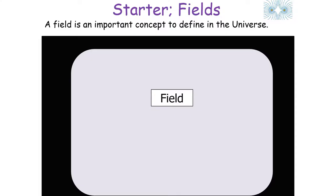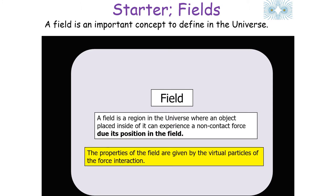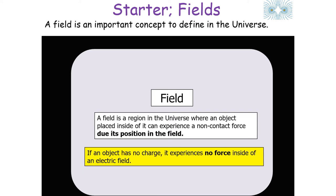A field is an important concept to define in the universe. A field is a region in the universe where an object placed inside of it can experience a non-contact force due to its position in the field. The properties of the field are given by the virtual particles of the force interaction. In gravitational fields the property is mass, but in electrical fields this property is charge.